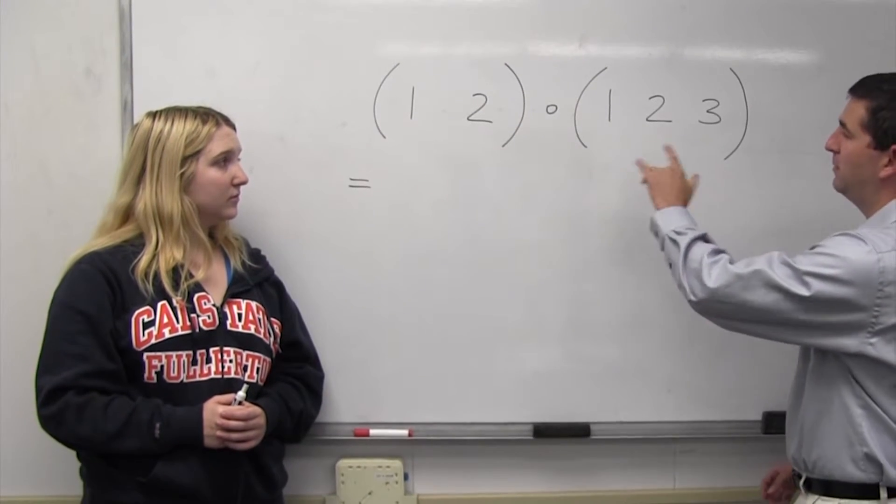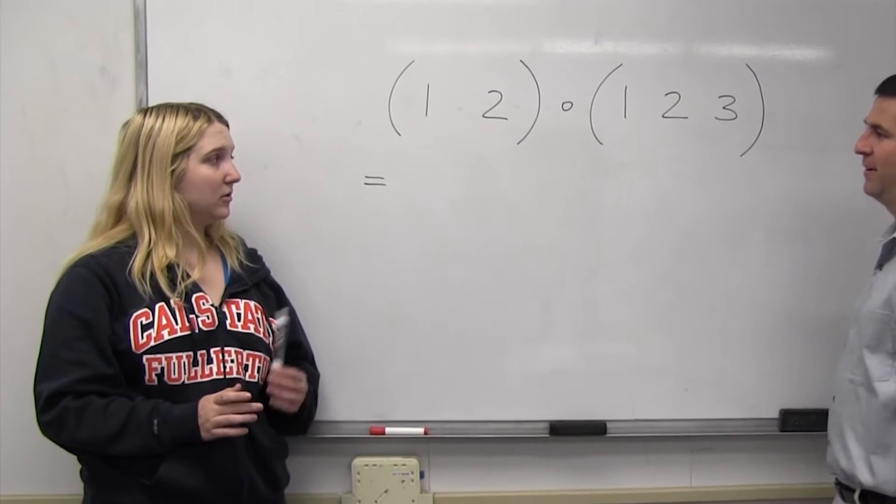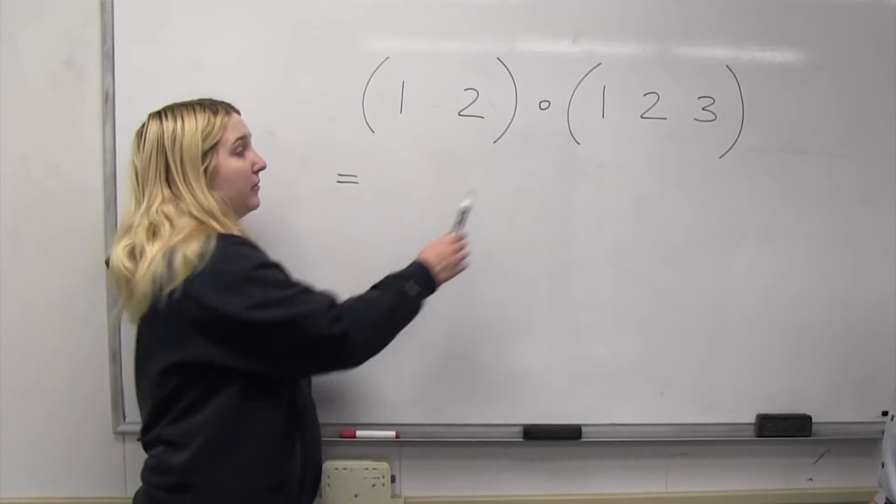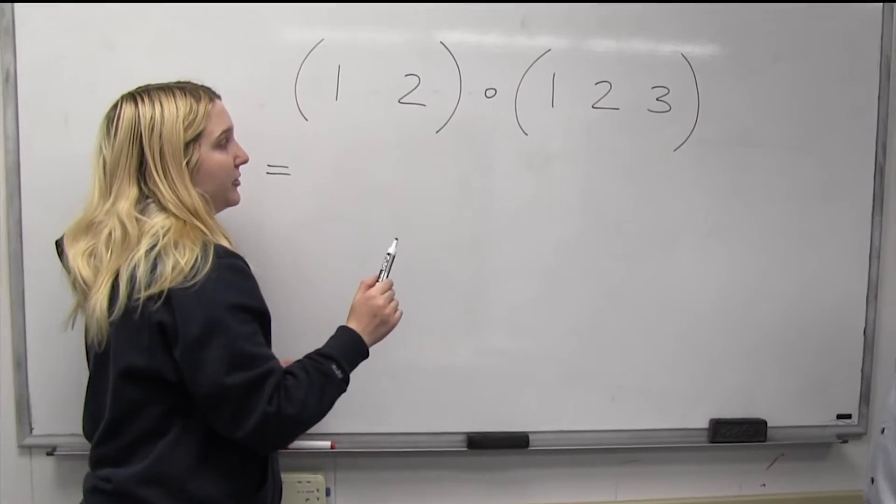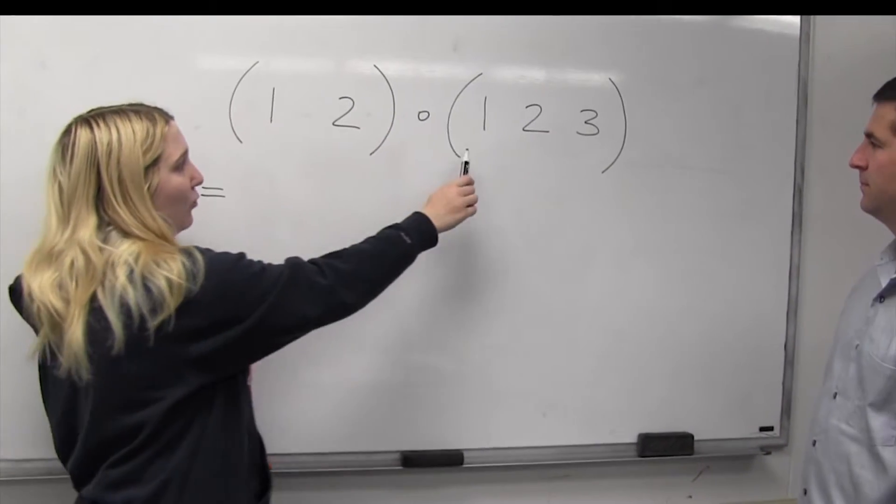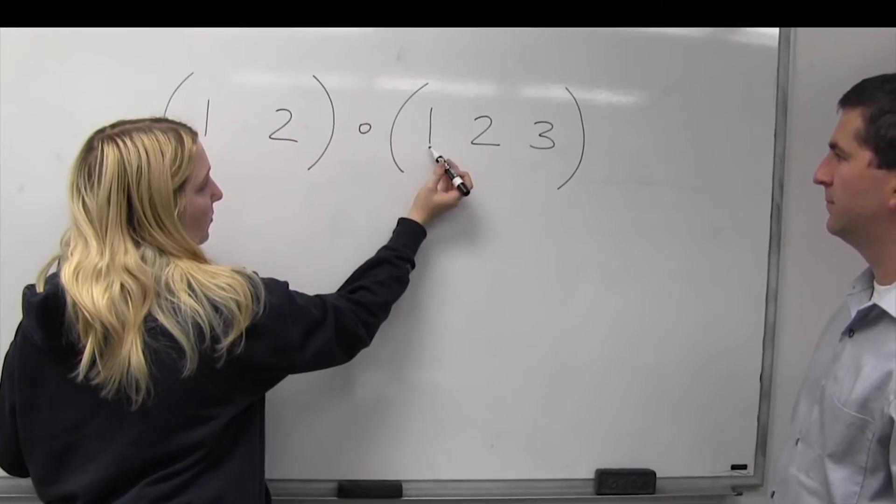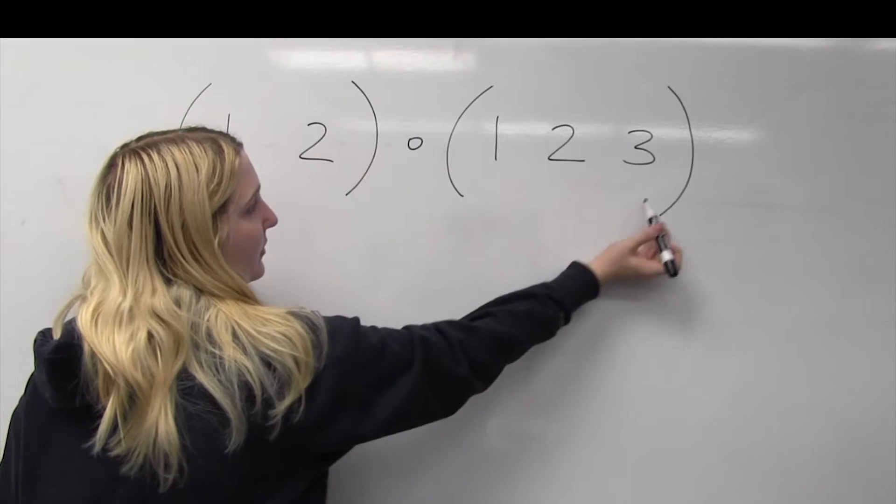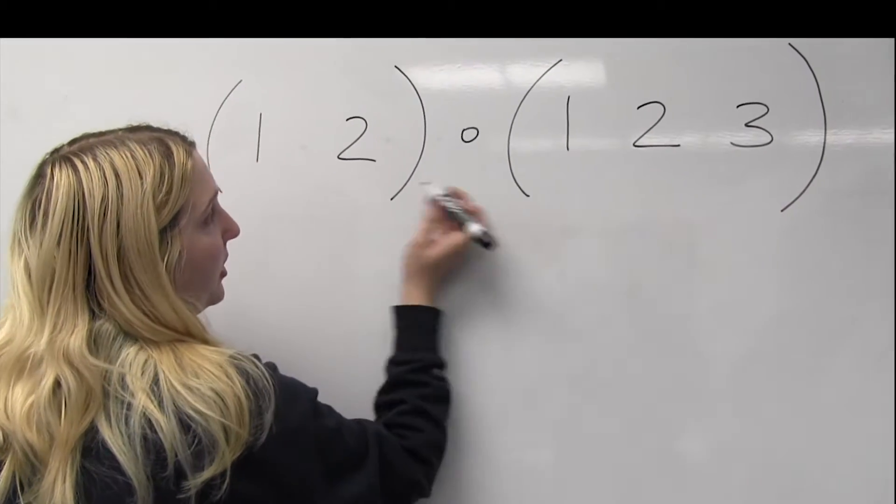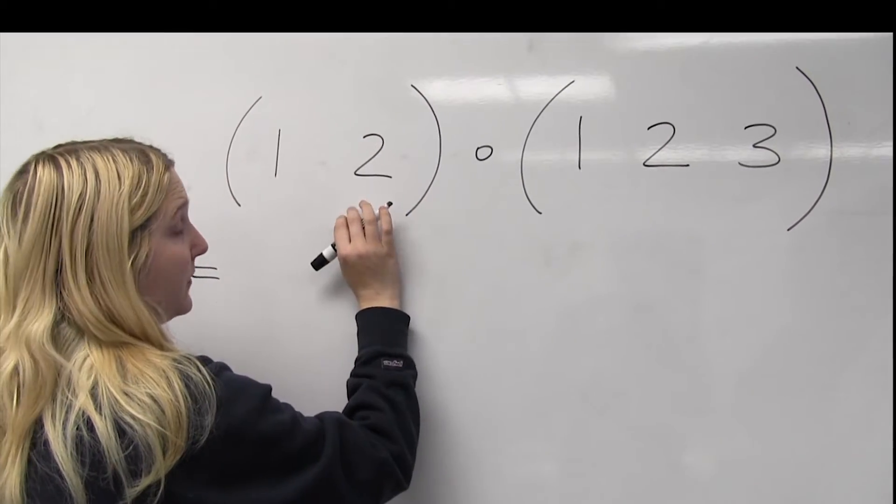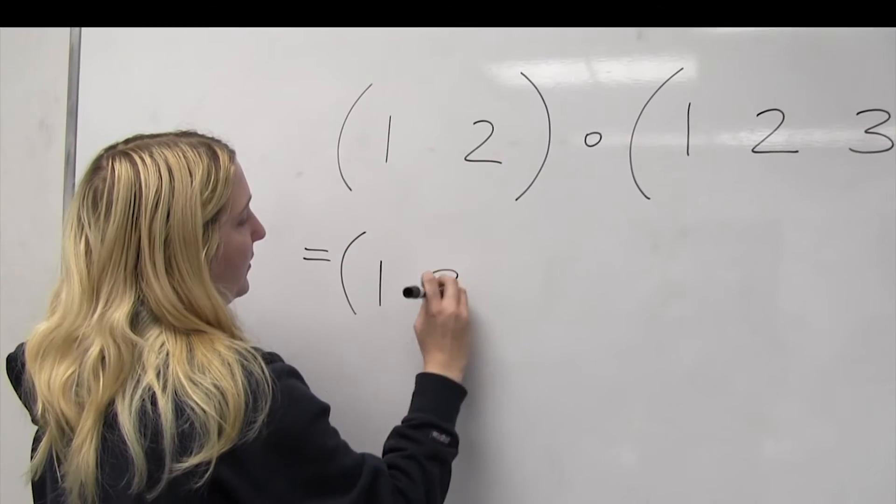Alright, so which permutation does the composition give us? Well, we're going from right to left because of the composition. And starting with 1, let's see, we go from 1 to 2 and then 2 to 3. And then when we compose, there's no 3 over here, so 3 is fixed. So we can just write 1 to 3.